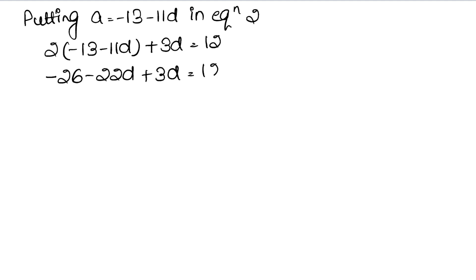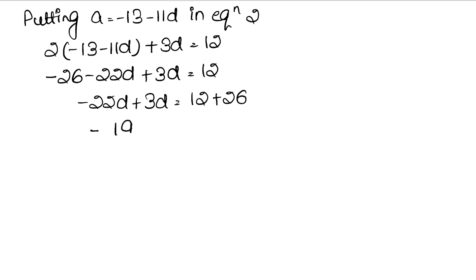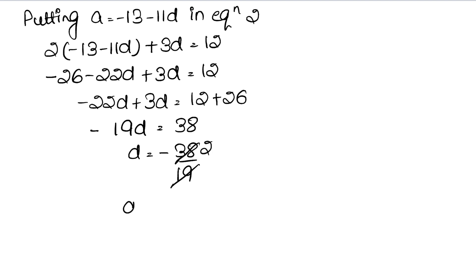Bracket open karte hain: 2 into (minus 13 minus 11d) plus 3d = 12, jo aata hai minus 26 minus 22d plus 3d = 12. D ki values ek side: minus 22d + 3d = minus 19d. Non-d values: 26 uss taraf jaake plus ho gaya. Toh minus 19d = 26 + 12 = 38. Toh d = minus 38 upon 19, that is minus 2.